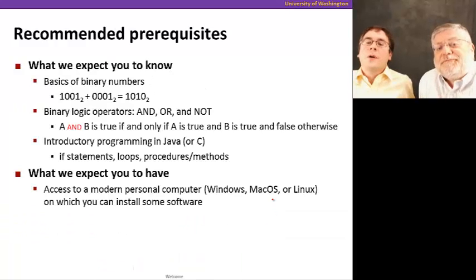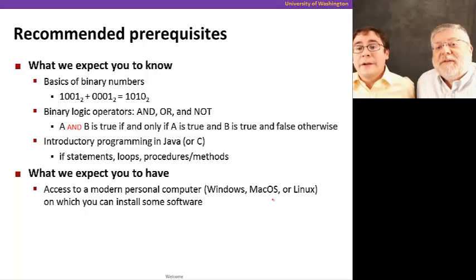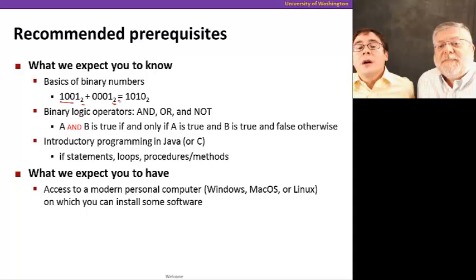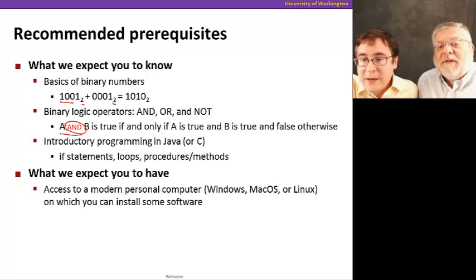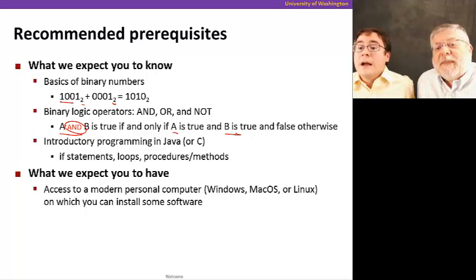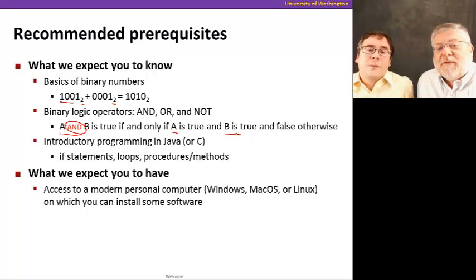We expect you to know some things, for example basics of binary numbers. We have two numbers, both base 2, and if you're trying to add 1001 with 001 you get 1010. We also expect you to know binary logic operators like AND, OR, and NOT. For example, A AND B is true if and only if A is true and B is true, and false otherwise. We also expect you to know introductory programming in Java or C would be even better — just if statements, loops, procedures, and methods. We also expect you to have access to a modern personal computer so you can run the tools required for the assignments in this class.